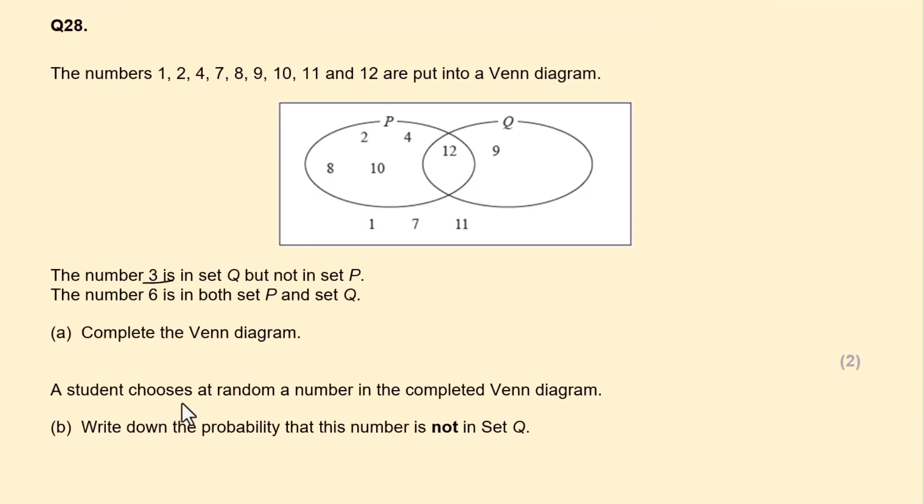3 is in set Q but not in P. Number 6 is in both sets P and Q. Complete the Venn diagram. So 3 is in set Q but not in P. So we can put 3 in Q but not in P. And 6 in both sets. So P and Q. So go in the middle. A student chooses a random number in the completed Venn diagram. Write down the probability that the number is not in set Q.